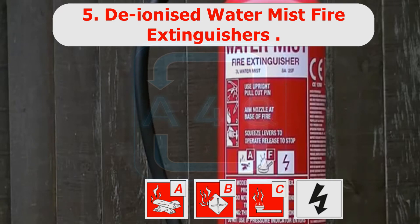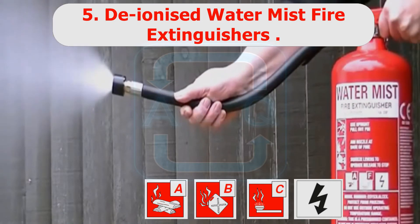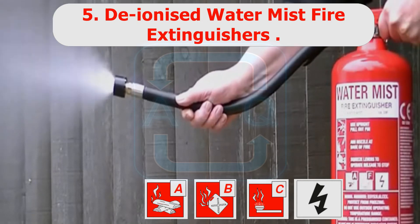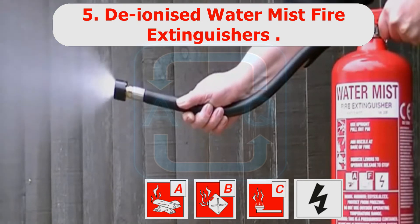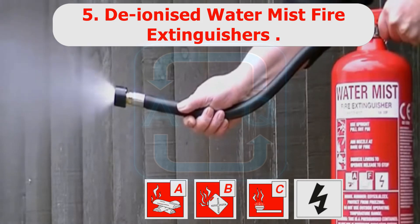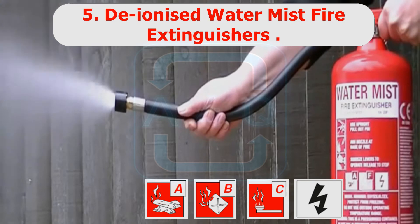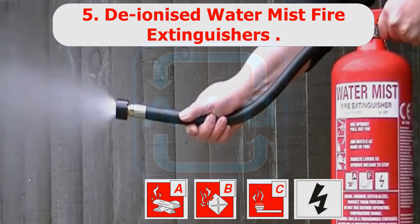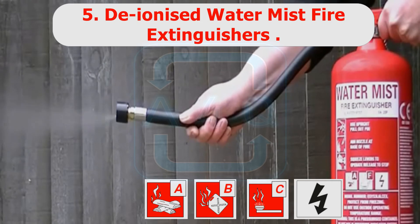Deionized Water Mist Fire Extinguishers have a white label and are highly effective on Class A, B, C, and burning electrical equipment. The unique supersonic nozzle creates a microscopic mist curtain, reducing the oxygen content. They are safe for use on electrical equipment as the deionized water mist does not conduct electricity and does not form puddles which could lead to electrocution.